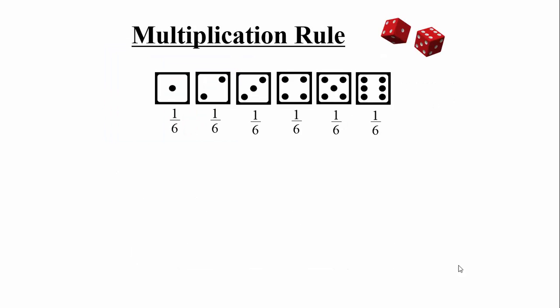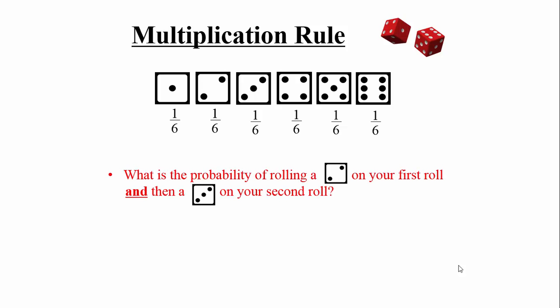Quick refresher: the multiplication rule applies when you have a sequence of events that all have to happen. For example, what's the probability of rolling a two on the first roll and a three on the second roll? The key word is 'and.' The probability of each roll is one-sixth, so one-sixth times one-sixth equals one-thirty-sixth. Quality control check: it's harder to roll a two and a three sequentially than just one of them, so this fraction should be less than either individual probability — which it is.